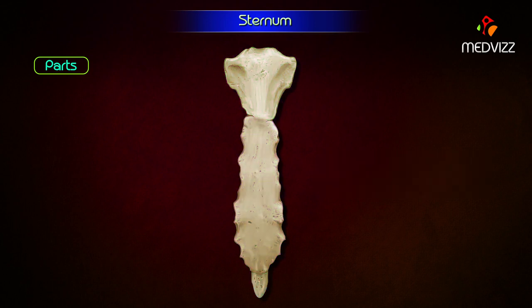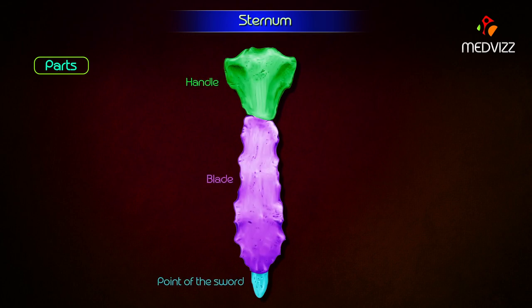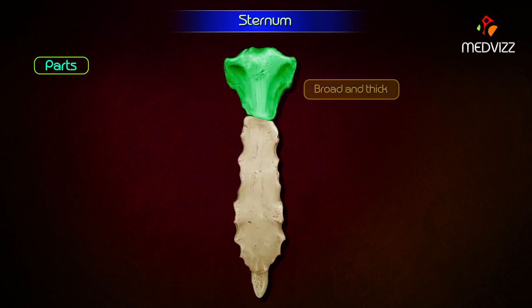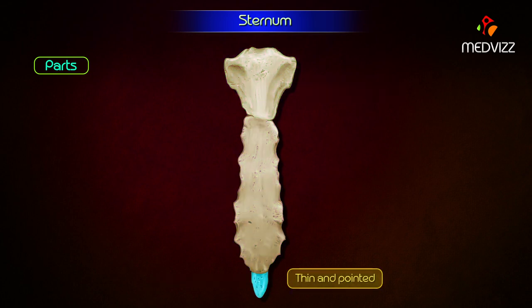Its three parts — the manubrium, body, and xiphoid process — represent the handle, blade, and point of the sword respectively. The upper part of the sternum is broad and thick, whereas its lower part is thin and pointed.